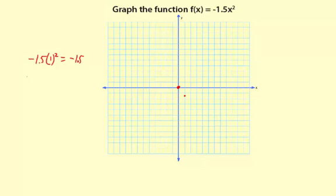Next point: -1.5 times 2 squared. That is -1.5 times 4, which is -6. So I'm going to go right from the vertex and then down 6: 2, 4, 6. That's the next point on the parabola.